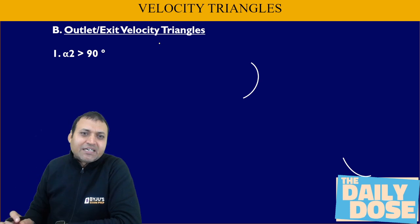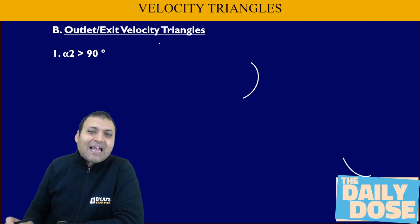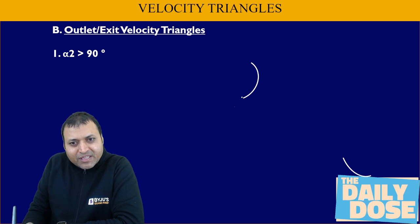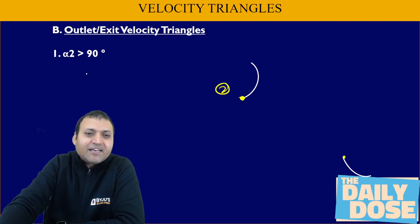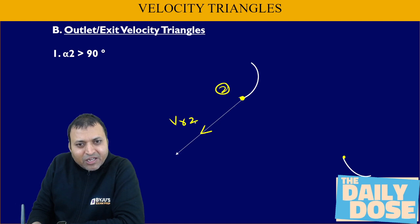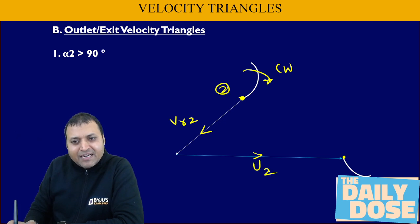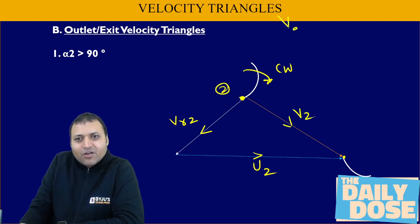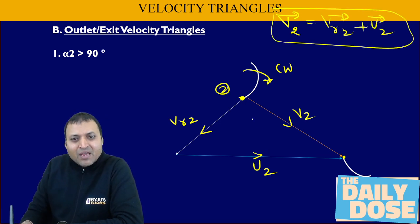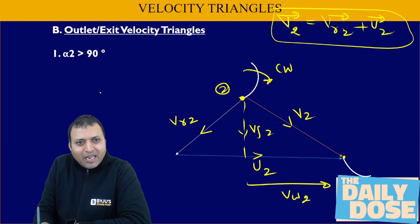Now let us come to the exit or outlet velocity triangle based on alpha 2. Alpha 2 is the guide vane angle at exit. At point 2 on the rotor blade, extending the rotor blade tangentially gives relative velocity vr2. Because the rotation is clockwise, the blade velocity u2 is on the right-hand side, and extending the guide vane tangentially gives v2. The relationship is v2 equals vr2 plus u2. Resolving v2 into two components gives vf2 vertically and vw2 horizontally. For alpha 2 greater than 90°, we can say vw2 is positive.